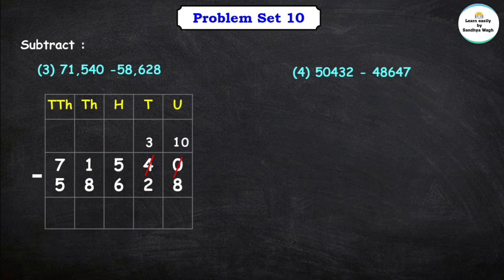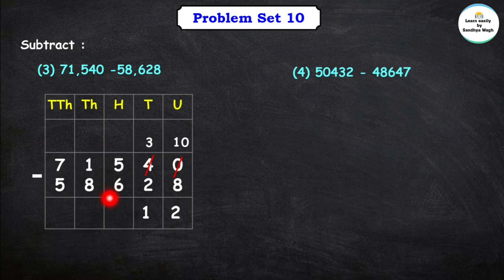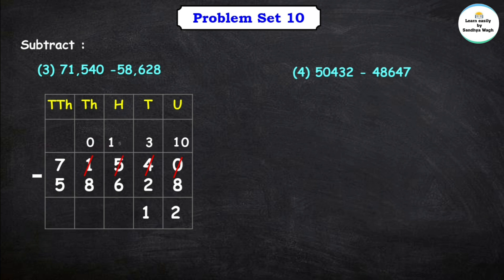The tens place had 4; we borrow 1, making it 3. The units place becomes 10. From 10 we subtract 8 and get 2. Now let's subtract the tens place: 3 minus 2 is equal to 1. In the hundreds place we have 5 hundreds and 6 hundreds — we cannot subtract 6 from 5, so we borrow. The thousands place had 1; after borrowing it becomes 0. The hundreds place becomes 15. 15 minus 6 is equal to 9.